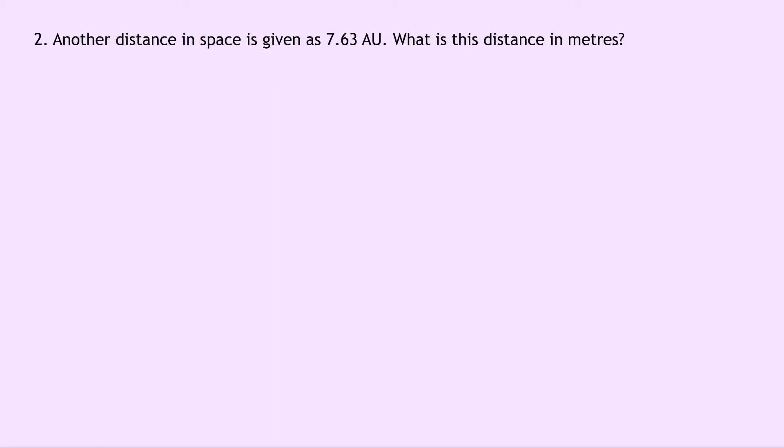Question 2 says that another distance in space is given as 7.60 AU. What is this distance in metres? Well this time we want to convert from AU into metres, so we're going to be expecting a much bigger number in metres than we have in AU. So in order to get this bigger number we need to multiply this time. So we're going to do 7.63 times 1.5 times 10 to the 11 and if you put that into your calculator you should get an answer of 1.14 times 10 to the 12 metres.